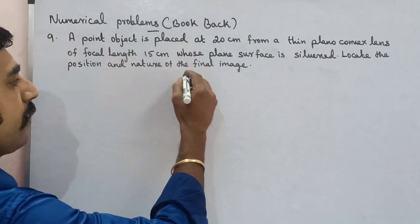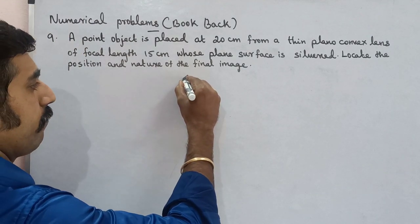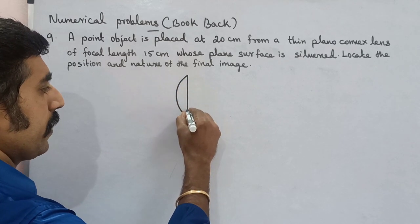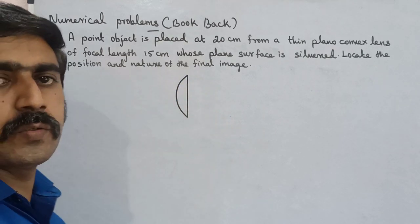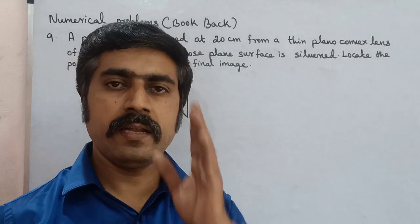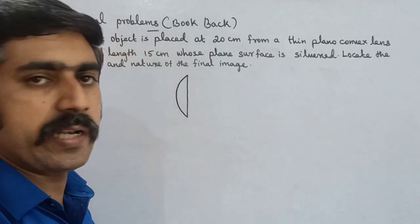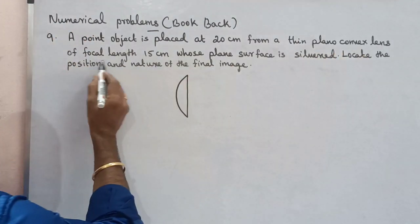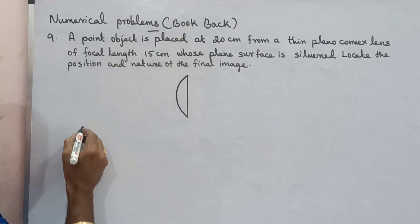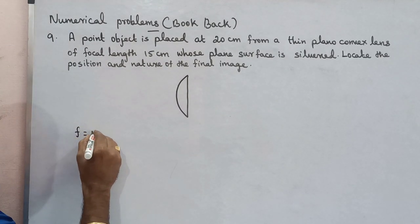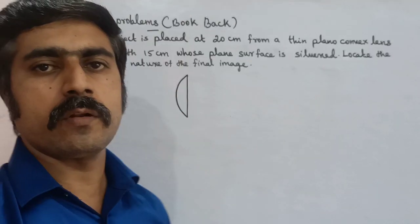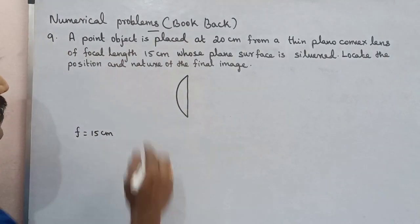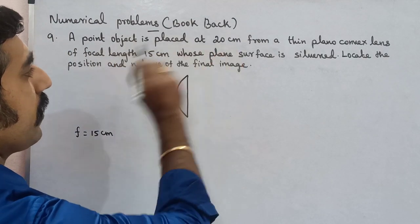You have a plano-convex lens. The focal length is f = 15 cm. For a lens, the focal length is positive. An object is placed at 20 cm, so u = -20 cm (negative sign by sign convention).